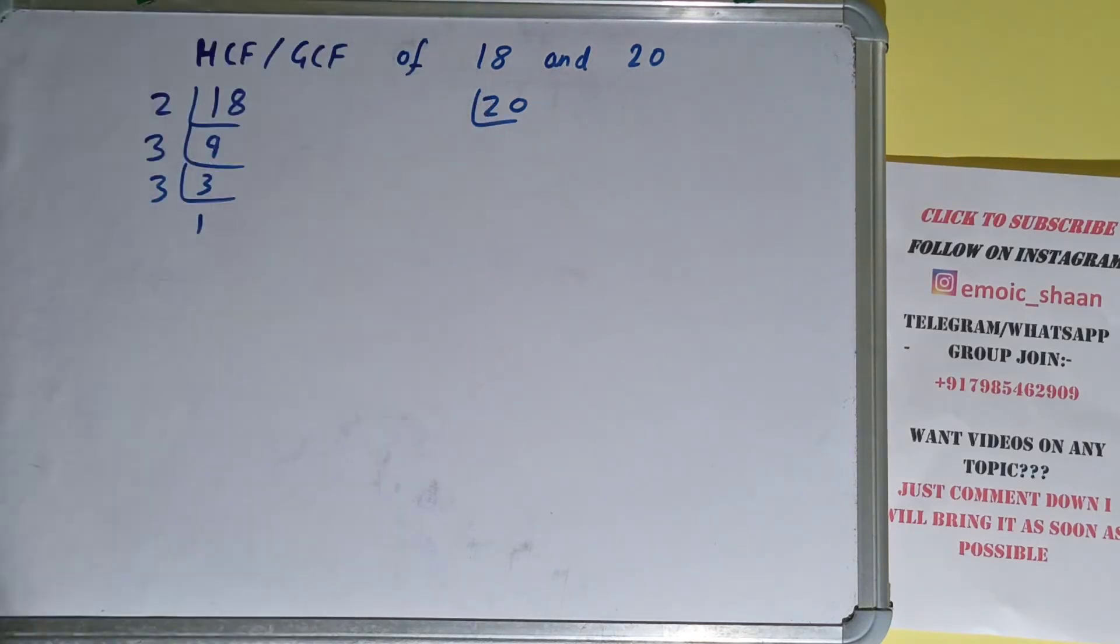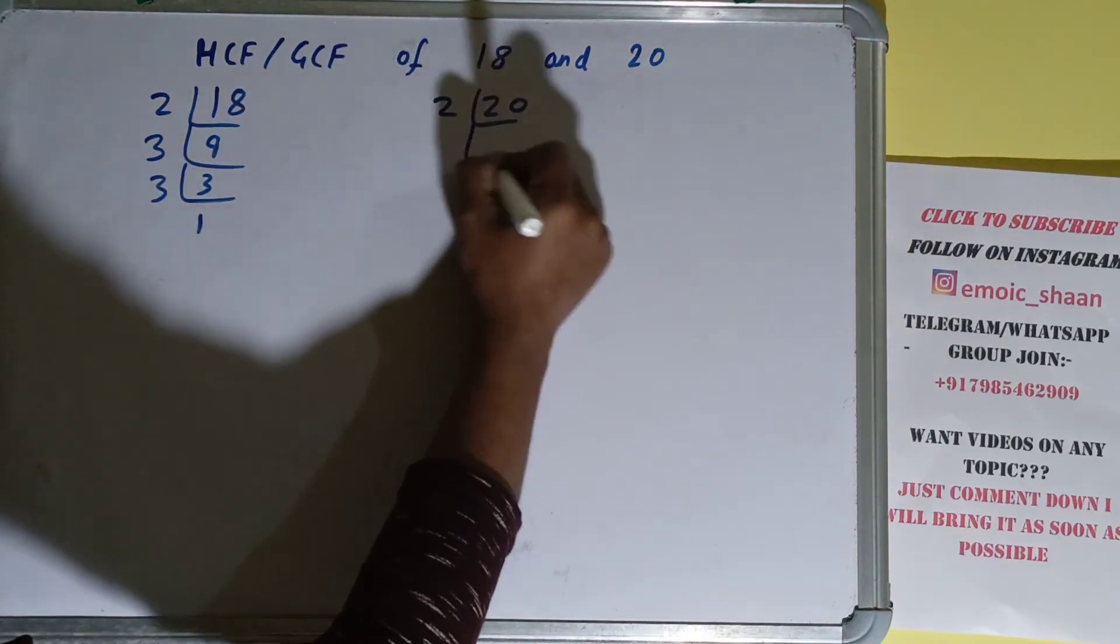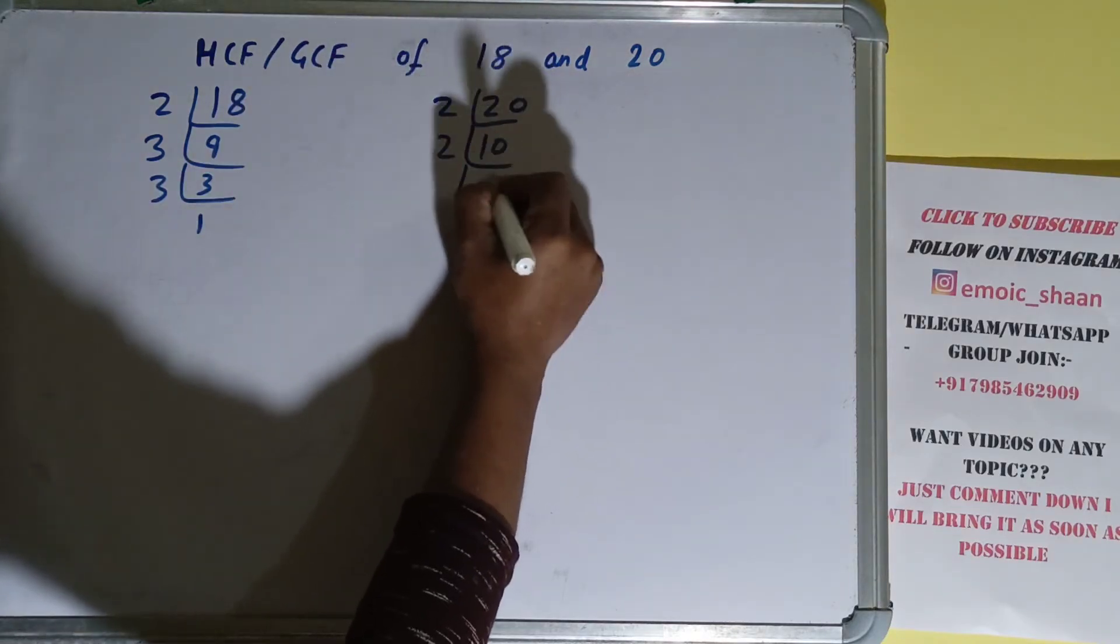Now we need to do the same with the number 20. Checking with 2: is the number 20 divisible by 2? Yes, it is, and we'll have 10. 10 is again divisible by 2, we'll have 5.